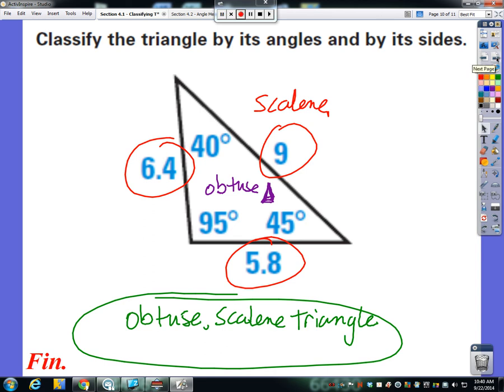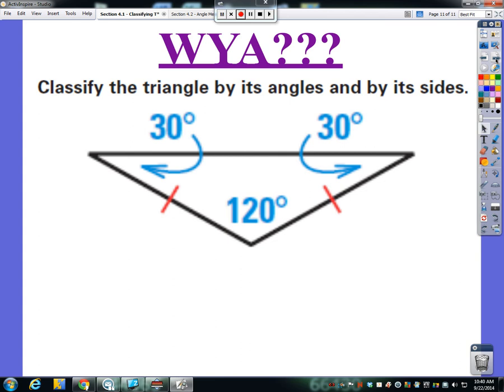Now what I really want you to do is complete the WIA that is right after this video on my website. It's just one problem, very similar to what we just did two times. I want you to take this triangle and identify it by its angles and its sides. Follow the link, write in the two names - one for its angles and one for its sides - and you've completed the WIA. That is all for video number one.